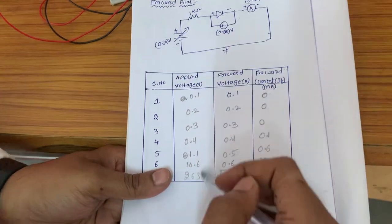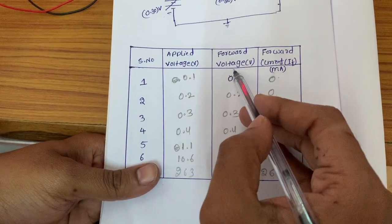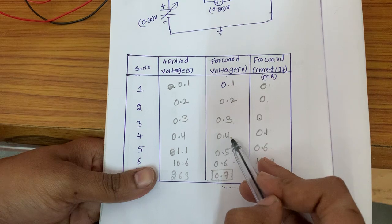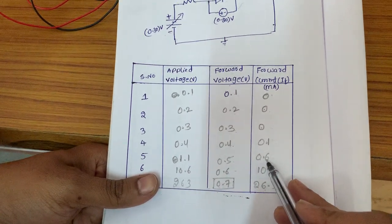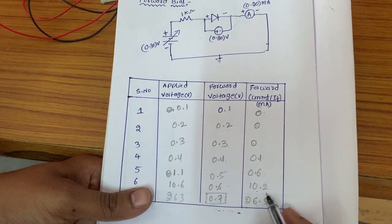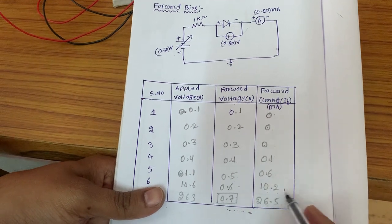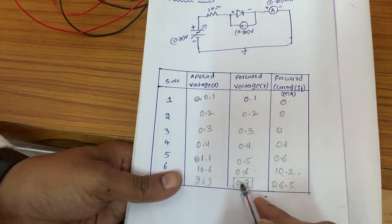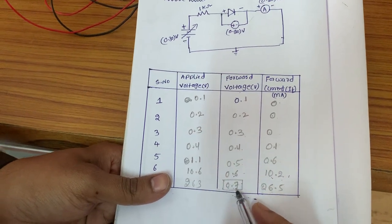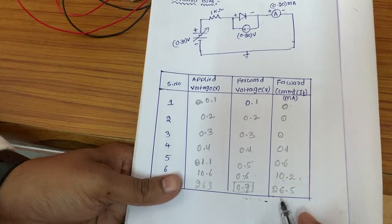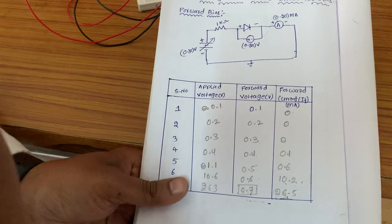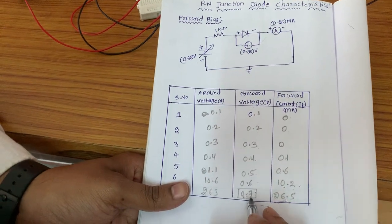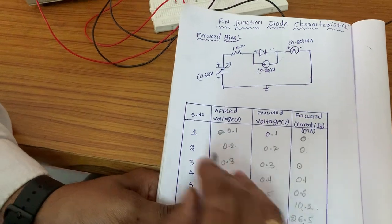Looking at the values obtained — this is the supply voltage, forward voltage, and forward current. At 0.1, 0.2, and 0.3 volts, we are not getting any current value. At 0.4 and 0.5 volts there is a slight increase. At 0.6 volts we are getting approximately 10.2 milliamps — you may get a nearby value. At 0.7 volts the forward current increases drastically. If you increase the RPS beyond 0.7 volts, the voltage does not increase further — 0.7 volts is the maximum forward voltage for the PN junction diode.